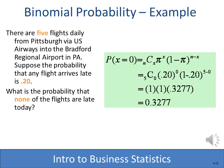Here's an example using the binomial probability formula. There are five flights arriving daily from Pittsburgh, and suppose the probability of any flight arriving late is 0.2. We want to know the probability that none of the flights arrive late, so x equals 0. Using the combination formula with n equals 5, x equals 0, and probability of 0.2, this solves to a probability of 0.3277 that none of the flights will be late.